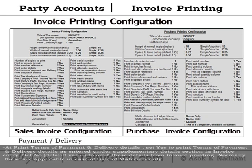Payment and delivery. At print terms of payment and delivery details, set yes to print terms of payment and delivery details as entered under the supplementary details screen in invoice entry. Set no — the default value — to omit these details from invoice printing. Normally these are applicable in case of sale of materials only.